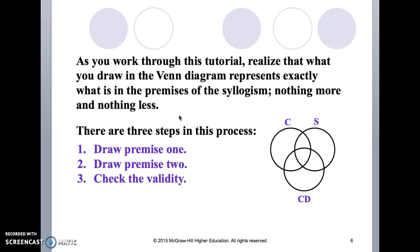We draw premise one, shade accordingly. We draw premise two, shade accordingly, and then we check for validity. It's that simple.